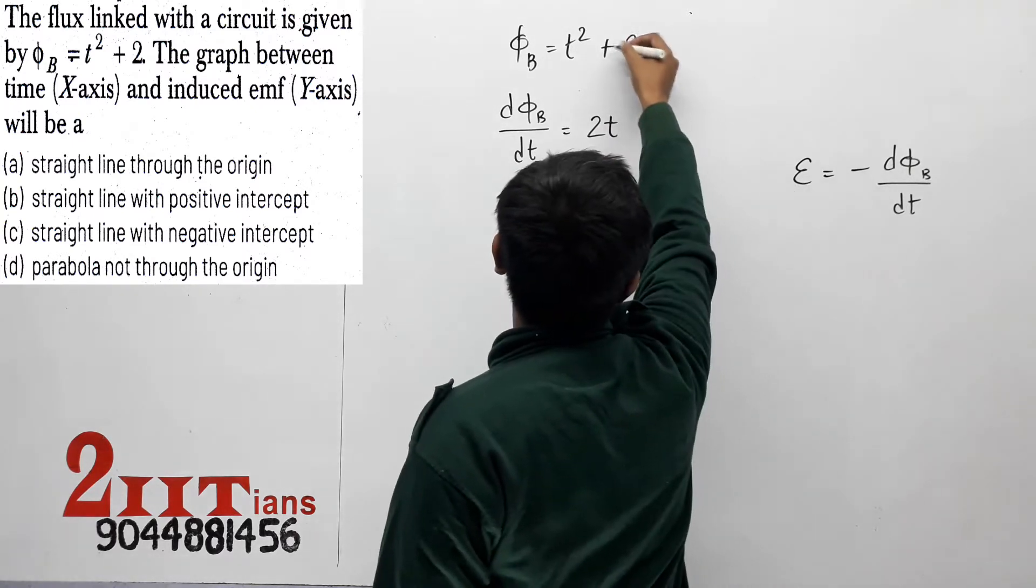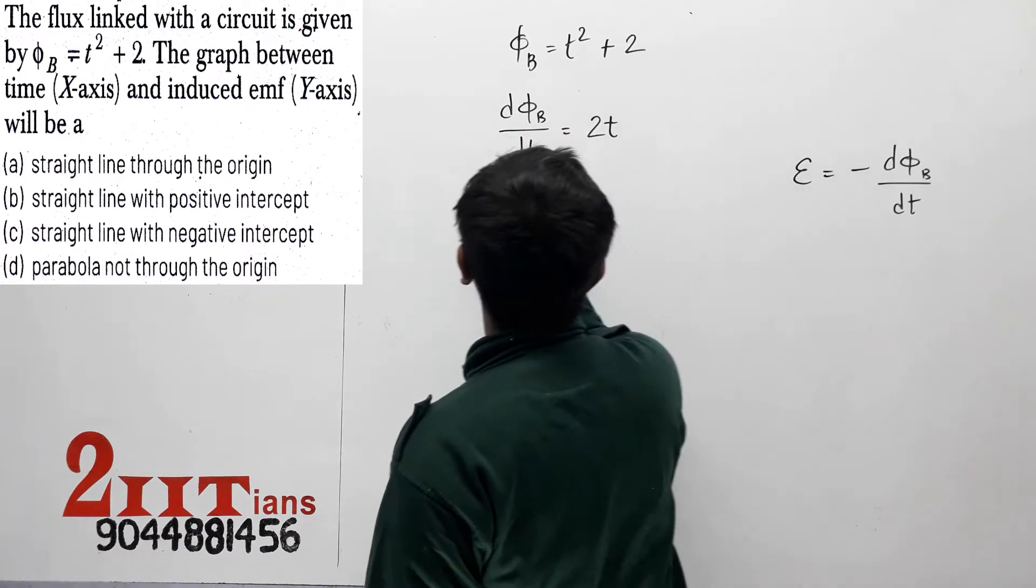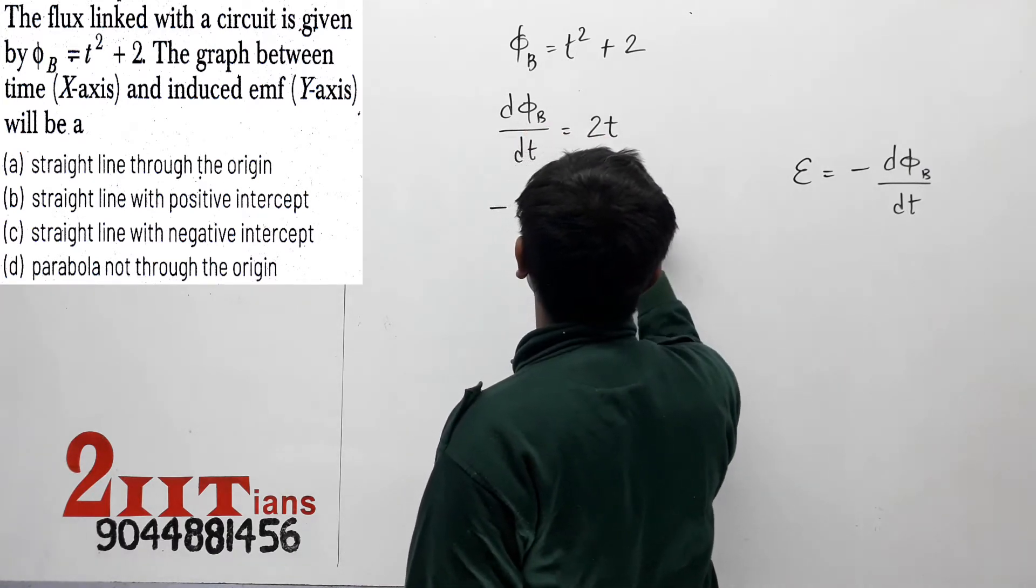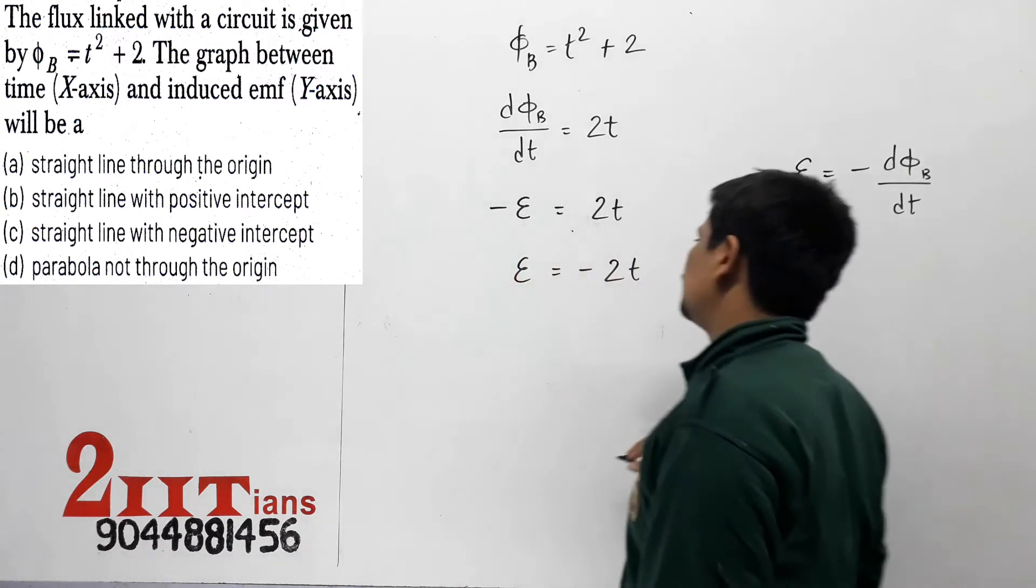φ_B equals t squared plus 2, so dφ_B by dt equals 2t. Then the induced EMF will be minus 2t.